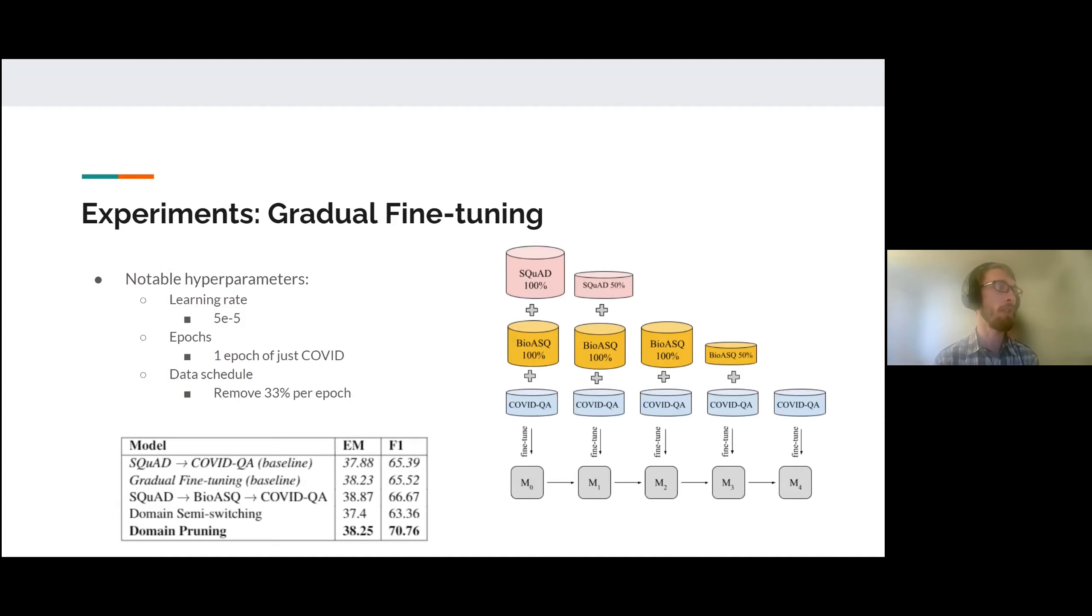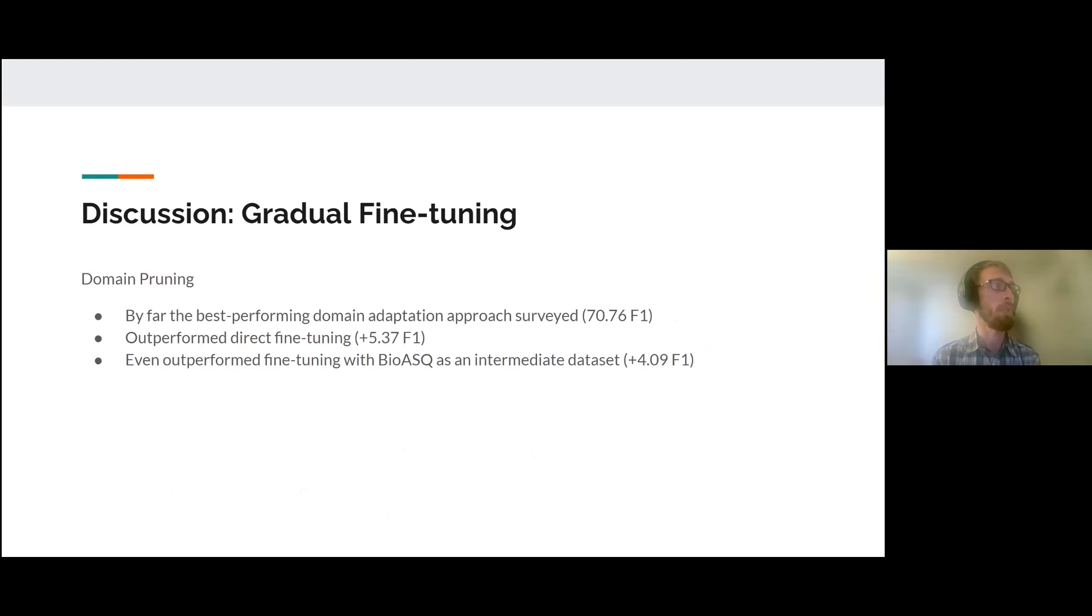So, notably with gradual fine tuning, we found that learning rates set to 5E to negative five and one epoch of finalized training on COVID, and then a data schedule of removing 33% of the data in each epoch resulted in significant gains. You can see down here that the domain pruning, which is also the method shown in the graphic, gave results of an F1 score above 70 points. Compared to the baseline of regular fine tuning at 65.39. We found that this was overall the best approach for domain adaptation among the techniques that we investigated. And it outperformed direct fine tuning by over five points and even regular fine tuning with a Bioask intermediate data set by four points.